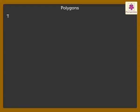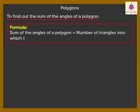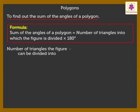Now if we have to find out the sum of the angles of a polygon, what do we do? This is the formula to find that. Sum of the angles of a polygon is equal to number of triangles into which the figure is divided multiplied by 180 degrees. Now to get the number of triangles the figure can be divided into, we subtract two from the number of sides of the given figure.